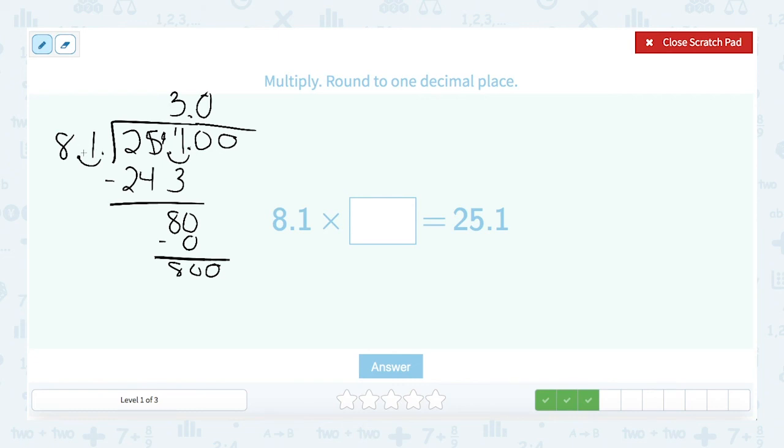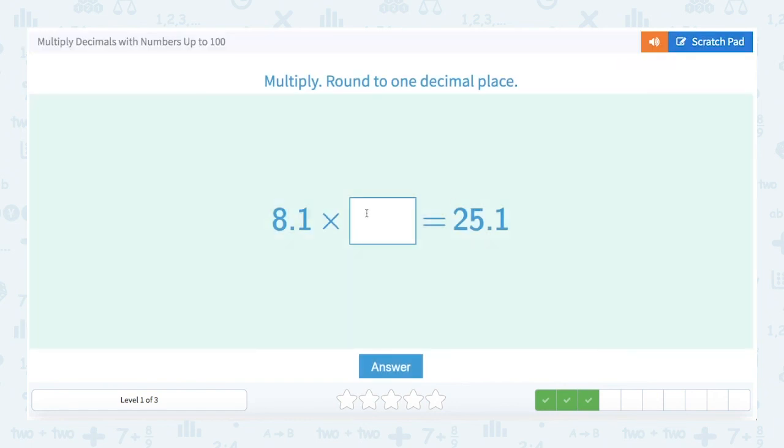81 goes into 800. Okay. Well, we know that 80 would go into 800 10 times. So 81 must go in there 9 times. 9 times 1 is 9. 9 times 8 is 72. And again, we really don't even need to bother finishing the problem at this point. Because we already know that this is bigger than 5. Therefore, the 0 is going to round up to 1. And our answer will be 3.1. So let's close our scratch pad and try 3.1 and see if that's correct.